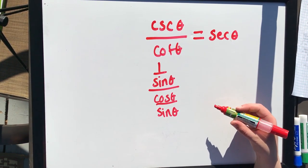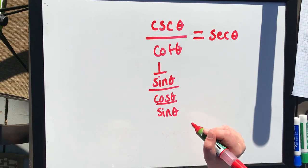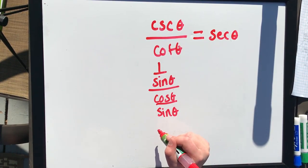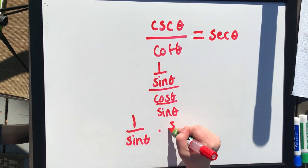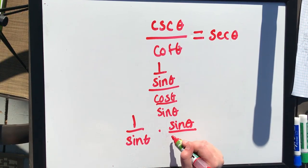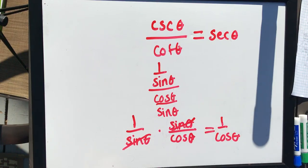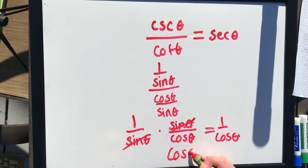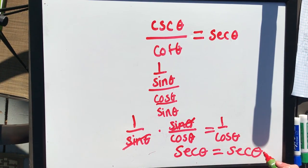Now we do fraction math and multiply the numerator by the reciprocal of the denominator. So we take 1 over sine theta times sine theta over cosine theta. The sine thetas cancel, which gives us 1 over cosine theta. Looking at our identities, 1 over cosine theta equals secant theta. So secant theta equals secant theta — when it equals the same thing at the end, we know that we verified it.